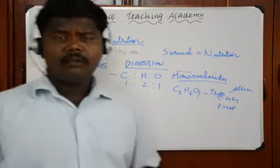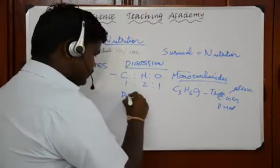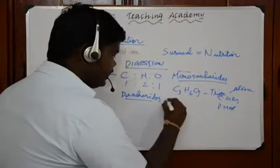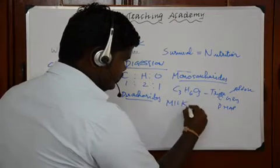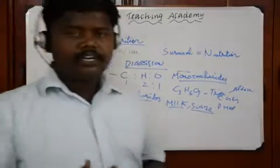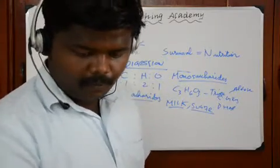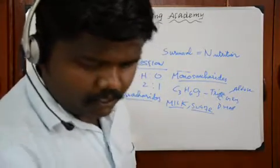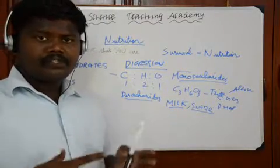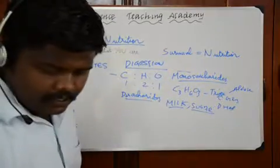Whatever common food we eat is largely made up of disaccharides. Nobody can reject milk and sugar from their diet — these two things are very important. Disaccharides are formed from two monosaccharides condensed together. There are three major disaccharides: maltose, sucrose, and lactose.